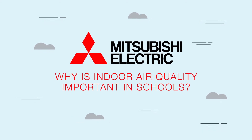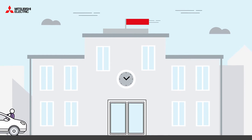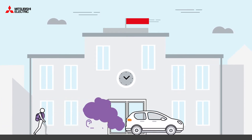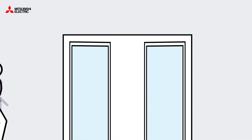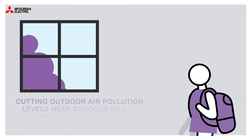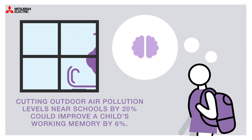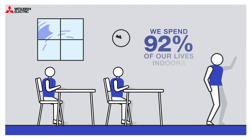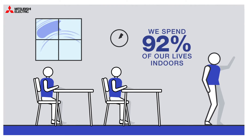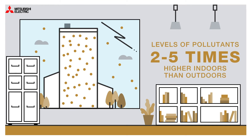Why is indoor air quality important in schools? Children are the most vulnerable to poor air quality, and exposure can have a lifelong impact on a child's health and development. Cutting outdoor air pollution levels near schools by 20% could improve a child's working memory by 6%. However, we spend 92% of our lives indoors, where air pollution levels can be two to five times higher than outdoors.